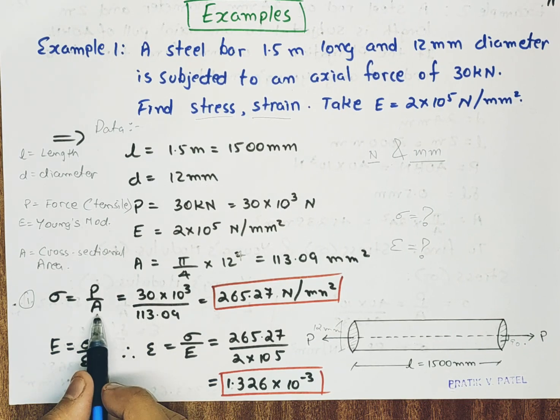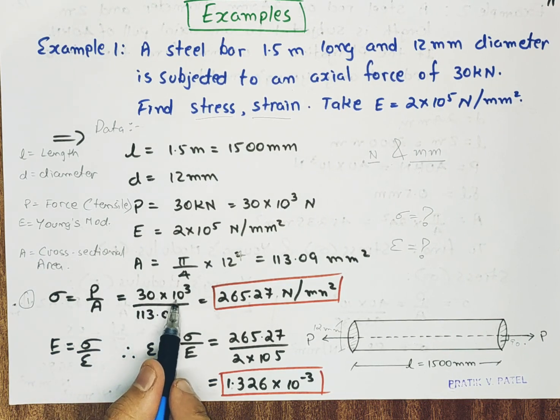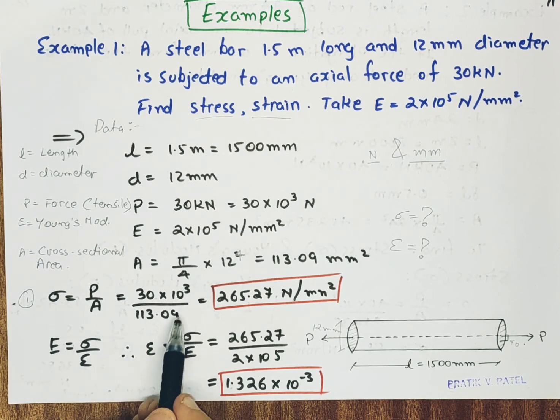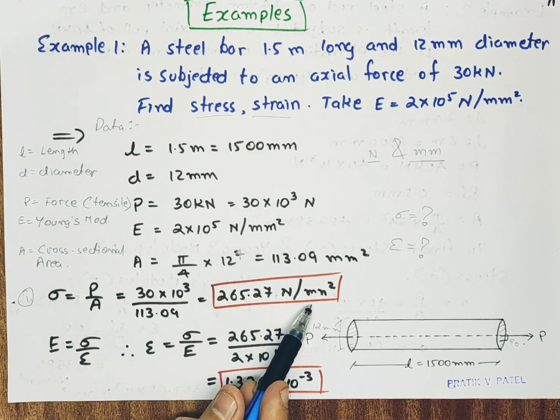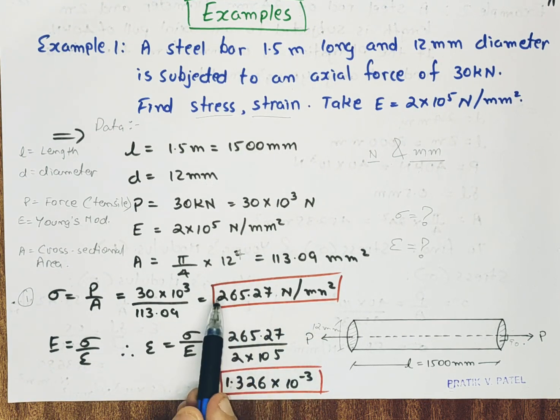So P is defined. This is our data. 30 into 10 raised to 3 upon 113.09 newton per mm square. So our answer is 265.27 newton per mm square.